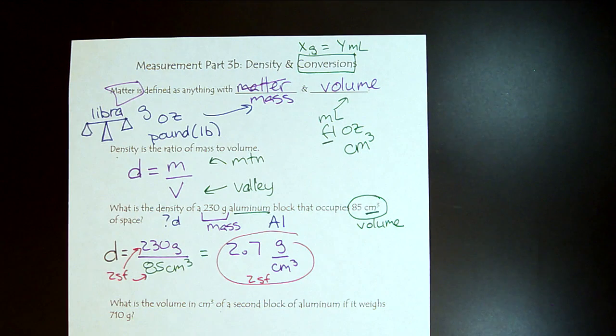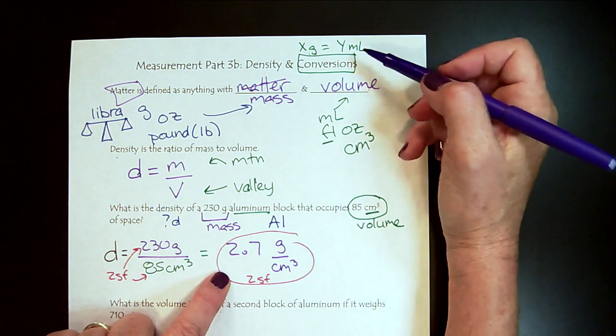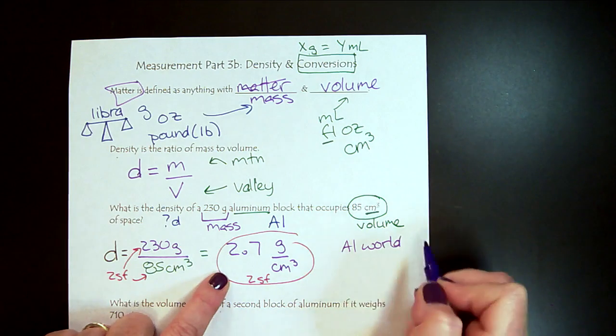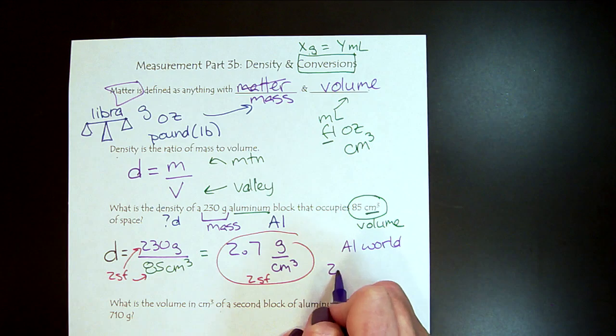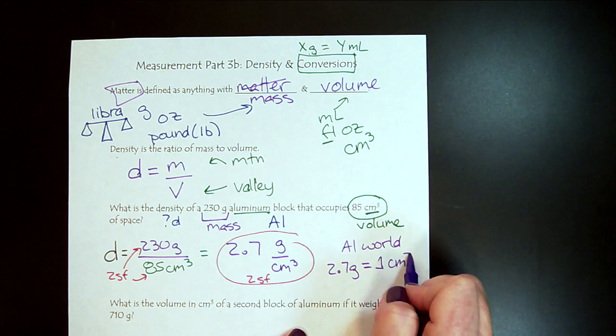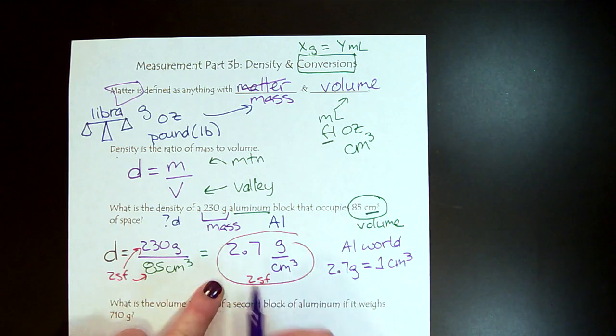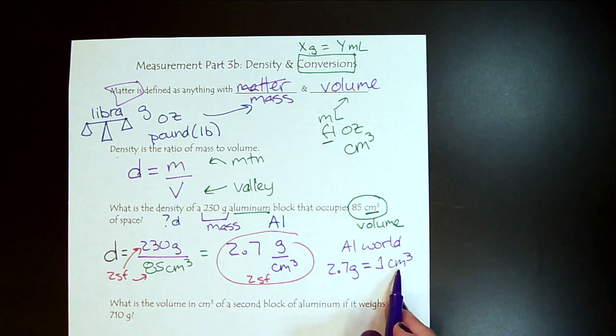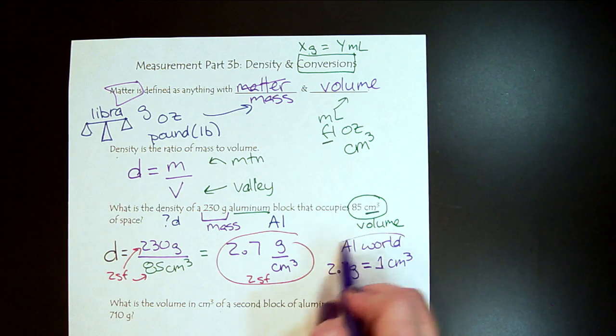So there will be questions in class where you're simply going to be asked what is the density of a substance, but it can also be very helpful to think of this like a conversion factor. So in aluminum world, for all things aluminum, there's 2.7 grams in every centimeter cubed, because we know every number is over one. So this is our conversion factor.